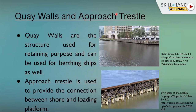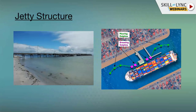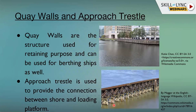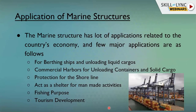A quay wall is similar in concept to a jetty structure and can be used for retaining or birthing of ships — but it is a solid wall type structure, which is the basic difference from a jetty. An approach trestle is essentially a bridge connecting the shore to the vessel landing location, transferring cargo from vessel to shore. It can be in concrete or steel piles connected with braces.